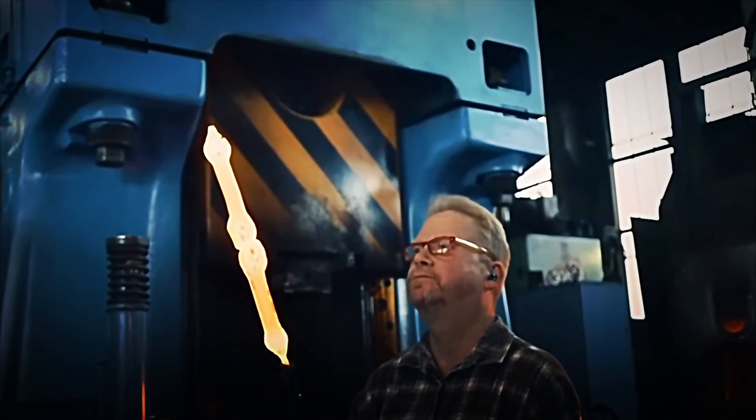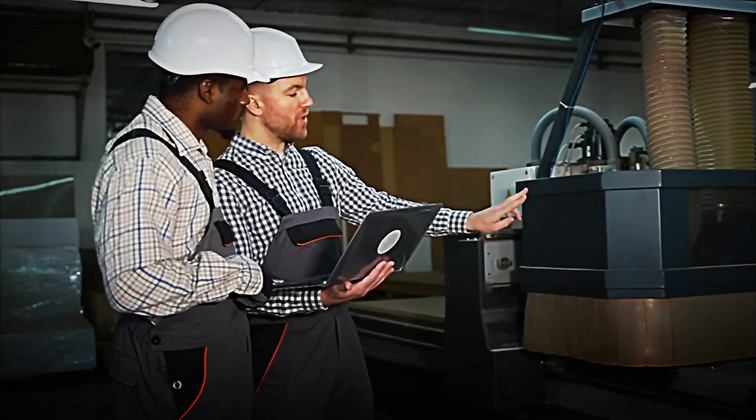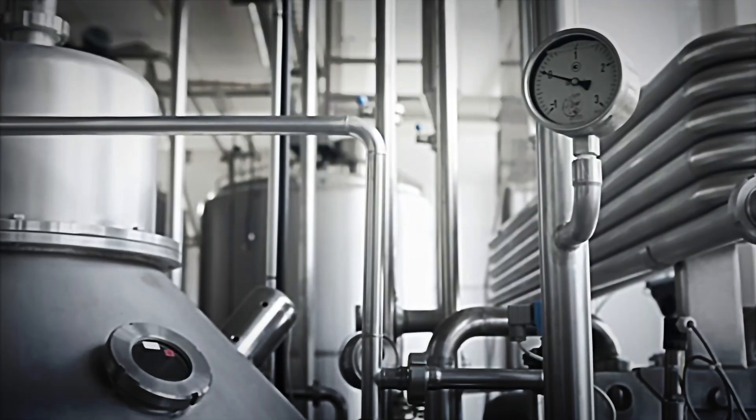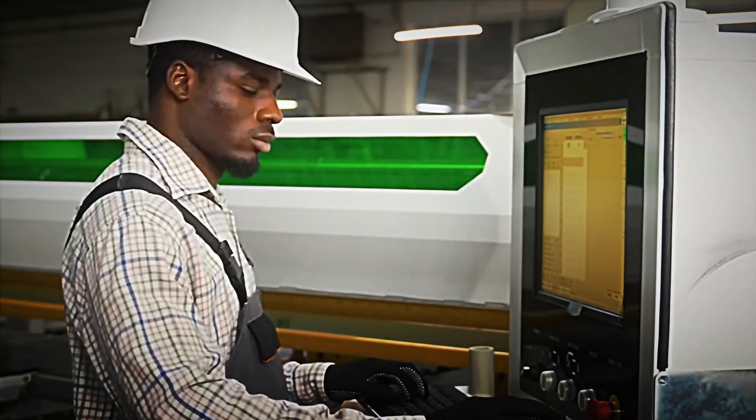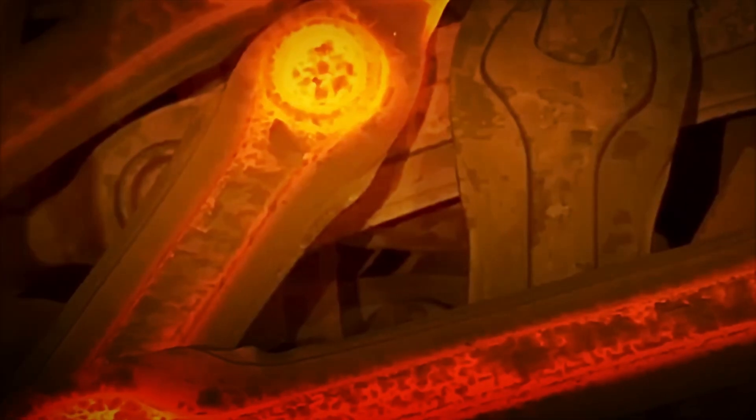As the blows of the press compress the material, the internal structure of the steel changes. The metal fibers align themselves to form the final shape, increasing the wrench's mechanical strength. This phenomenon is key: properly forged steel will have a longer lifespan and withstand higher loads without deforming.